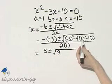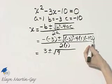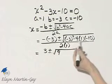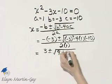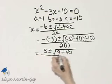4 times 1 is 4, and 4 times negative 10 is negative 40. But this is minus negative 40, so this is plus 40, all over 2.